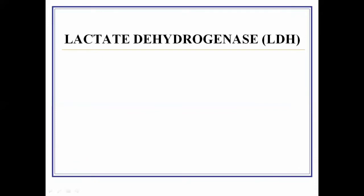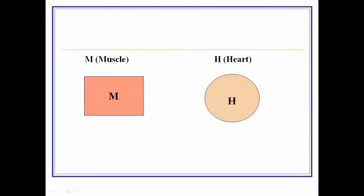LDH is a tetrameric enzyme, meaning it is a combination of four polypeptide chains. These four polypeptide chains are a combination of two types: M-type and H-type polypeptide chains. These two types combine in different proportions to give rise to the different isoenzymes of LDH.